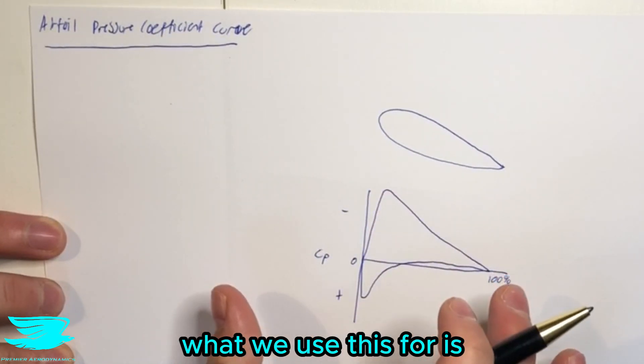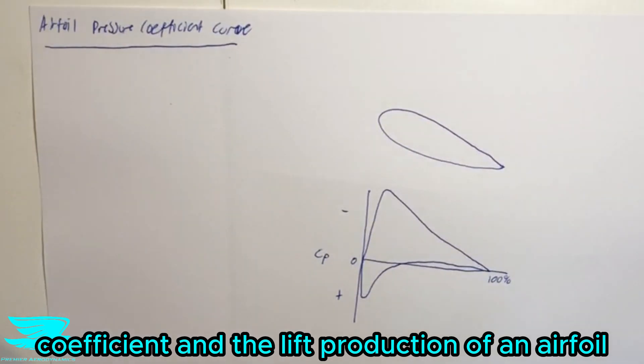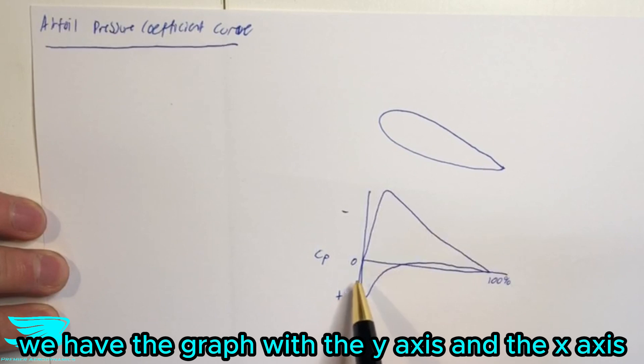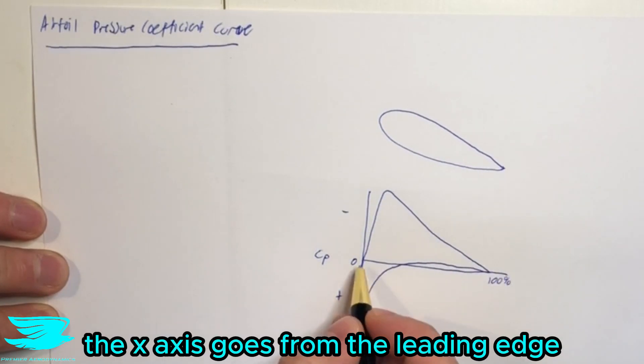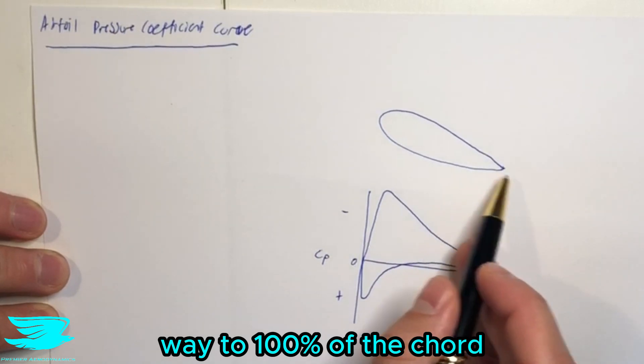So overall, what we use this for is often to look at the lift coefficient and the lift production of an airfoil. So we have an airfoil up here and underneath we have the graph with the y-axis and the x-axis. The x-axis goes from the leading edge, so 0% of the chord, all the way to 100% of the chord, which is the trailing edge.